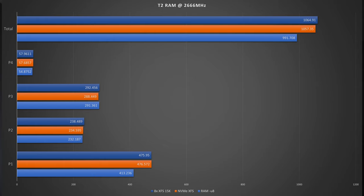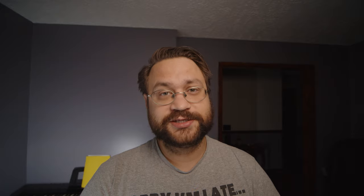By doing that, we end up with a RAM-only time of 991 seconds, and the NVMe and hard drives are actually even slower at that speed. So I decided to test everything without the RAM, using an NVMe as T2.